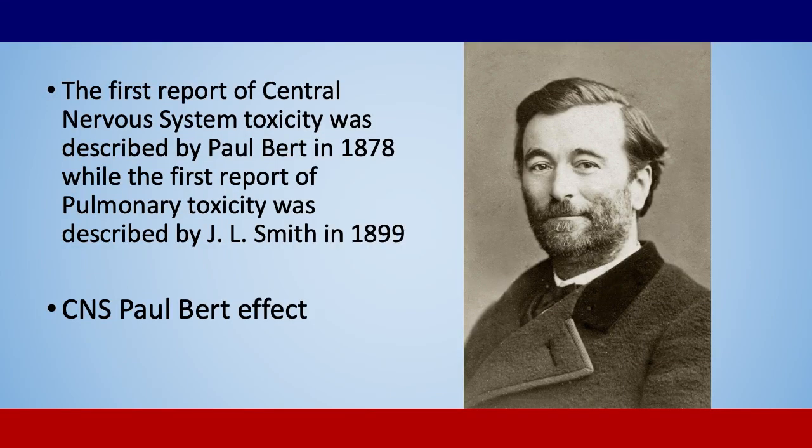Central nervous system oxygen toxicity was first described by Paul Burt in 1878. This is really understanding the effect of oxygen in a short period of time based on a dose that's too high in that moment. Oxygen diffuses across its gradient from high concentration to low concentration. When the pressure of oxygen, which creates that gradient, exceeds certain limits, it has the ability to create toxicity symptoms.